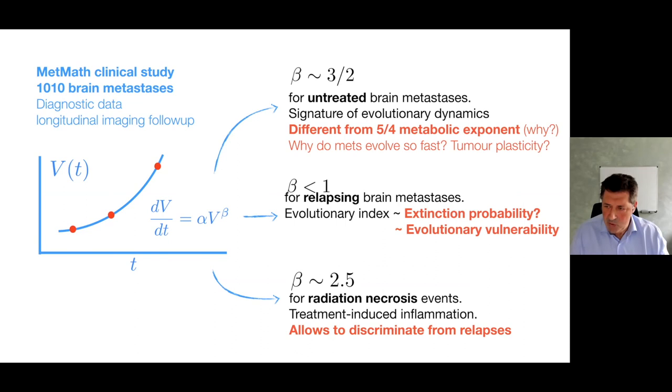Finally, this beta, this very high beta around 2.5 for radiation necrosis events, is the signature of treatment-induced inflammation. It allows to discriminate radiation necrosis from relapses, which is something I think could be useful in the clinics. In fact, radiologists appreciate very much this result.